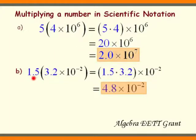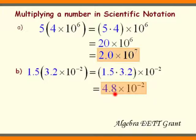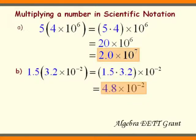In this one, we're going to say 1.5 times 3.2 for a total of 4.8 times 10 to the 2nd. We didn't have to do anything to this one because our answer was already in scientific notation form.